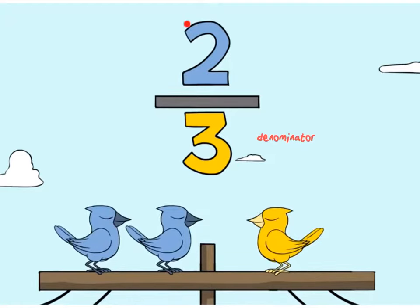The top number is our numerator, and this is our part. So out of the entire group of birds, only two are blue. Out of our entire group of birds, which is three of them, only two are blue. So when we talk about fractions, we are talking about a part of a whole.